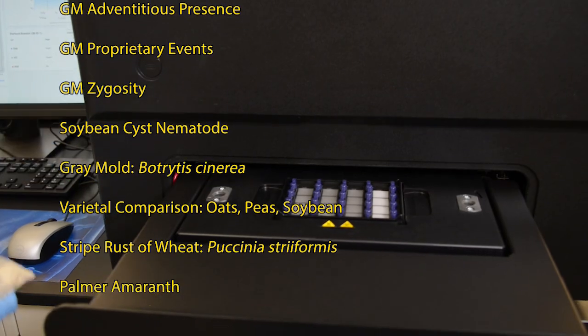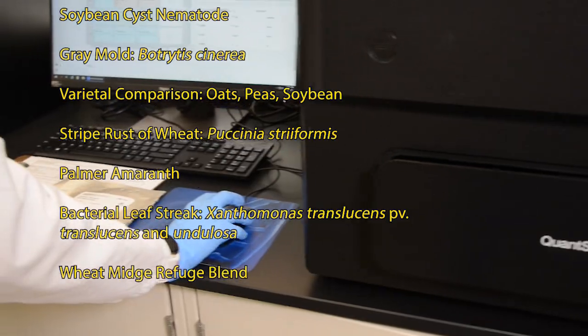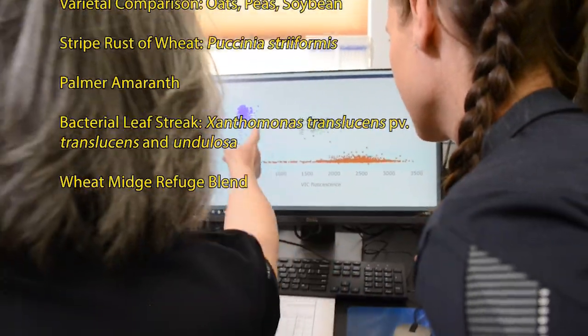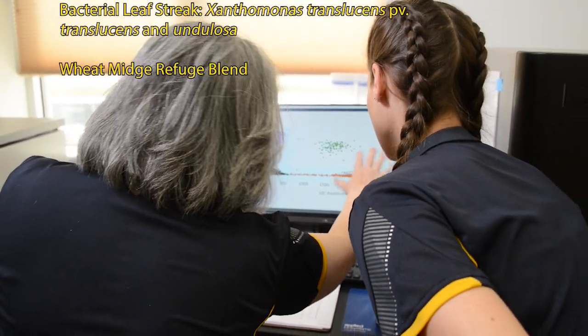From our pioneering Fusarium graminearum and club root qualitative detection by conventional PCR to sensitive and quantitative qPCR analysis of club root and bacterial leaf streak pathogens, to precise linear quantitation by digital PCR such as used for wheat midge refuge blends.